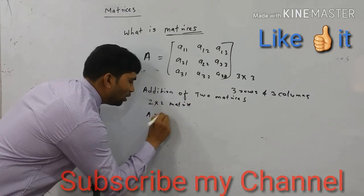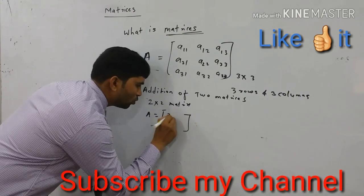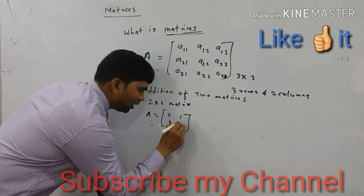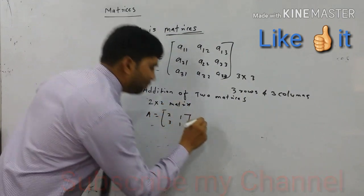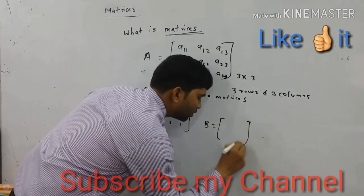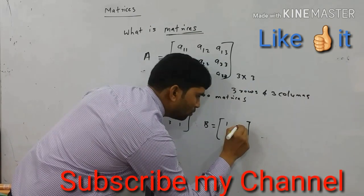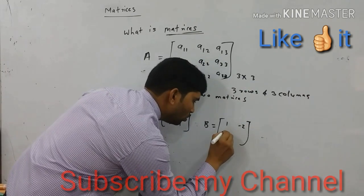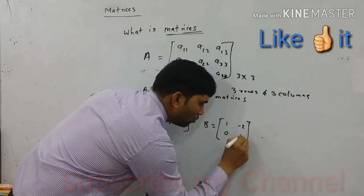A is equal to element is 2, 1, 3, 1 and B matrix, we take element 1 minus 2, 0, 1.